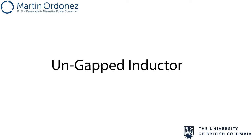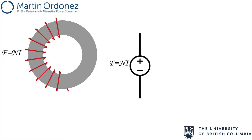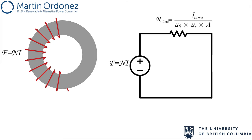One way of classifying inductors is grouping them into gapped and ungapped inductors. For ungapped inductors, here is a basic structure: there is a magnetic core, a winding around it, and no discrete gap in the core. While a toroidal core is shown here, the core can be of any geometry. To build the equivalent circuit, the winding is equivalent to a voltage source with value N times I. Next, we have to find the reluctance of the core, calculated using the reluctance equation.